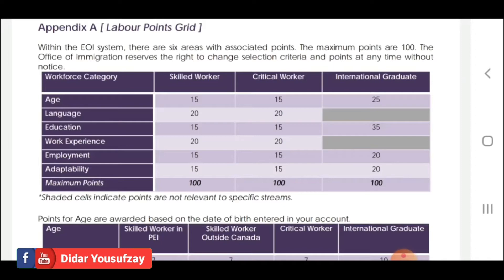Adaptability is worth a maximum of 100 points. You can find the number of points contributing to the score, or the score of the score.